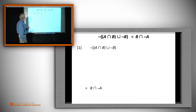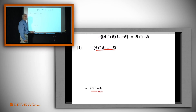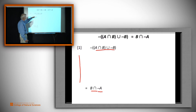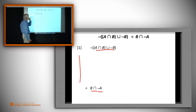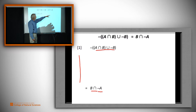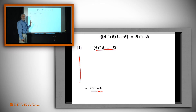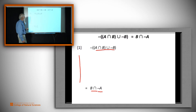Let's start working on this example. Here we have our left hand side, here we have our right hand side, and we want to transform from one form to the other. Looking at the left hand side, I see a complement of a union. The right hand side doesn't have any complement sitting on the outside, so I want to move this complement inside the expression.